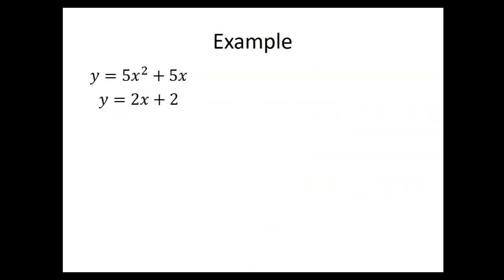Next example. Now, this is not a linear system because one of the equations has an x squared in it. So that's not a linear equation. But we can still solve by the substitution method. In fact, that's pretty easy to make the substitution because the top equation tells us that y is equal to 5x squared plus 5x. So we can put in 5x squared plus 5x in place of the y in the second equation.